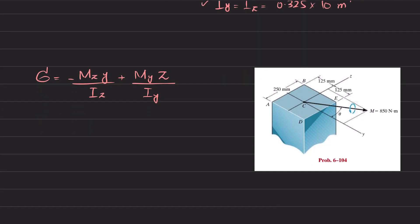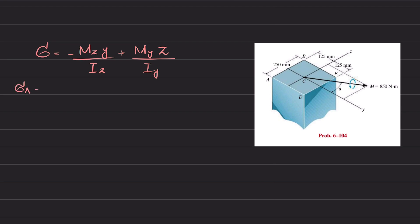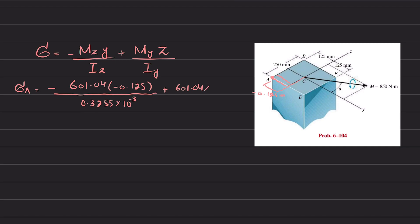Now we calculate stress at point A using σ = −Mz·y / Iz + My·z / Iy. So: −Mz = −601.04, and the y-coordinate of point A is −0.125 m (it is at a distance of 0.125 m in the negative y-direction), divided by Iz = 0.325 × 10⁻³. Plus My = 601.04 times the z-distance.